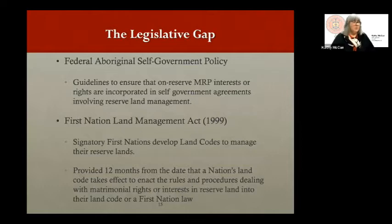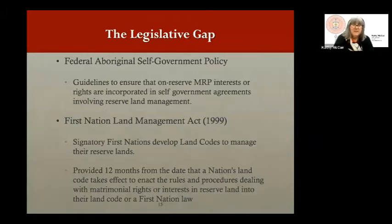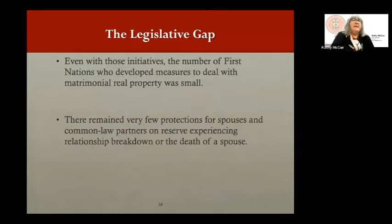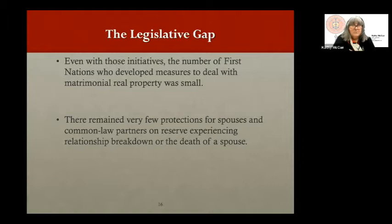In terms of filling that gap, there were a number of initiatives. The federal government included in their self-government policy some guidelines to ensure on-reserve MRP interests or rights were built into self-government agreements. The First Nation Land Management Act provided signatory First Nations 12 months from the date a land code took effect to enact rules and procedures dealing with MRP. But the number of First Nations who actually developed measures to deal with matrimonial real property was quite small, leaving very few protections for spouses and common law partners experiencing relationship breakdown or the death of a spouse.